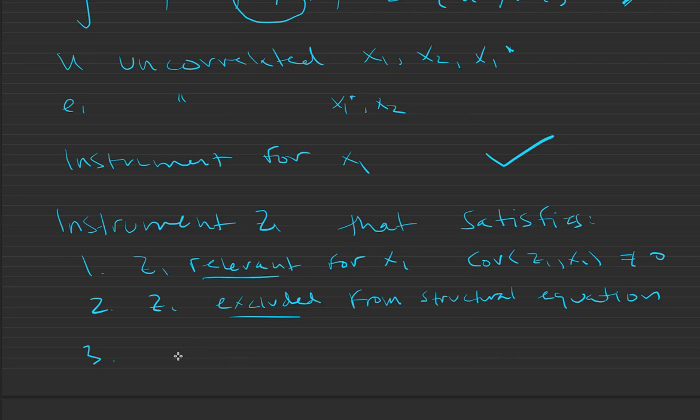And number three, z1 is uncorrelated with both u and e1. This is our exogenous assumption.